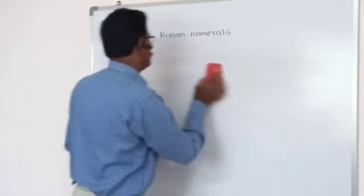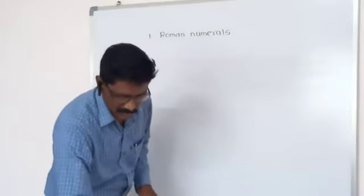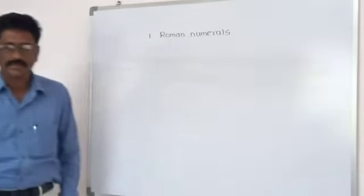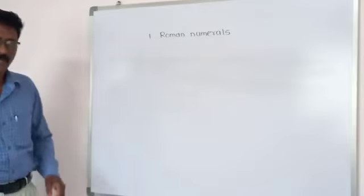You know that I, V and X are the basic symbols mostly used in Roman numerals, but some other symbols are also used here for writing bigger numbers.